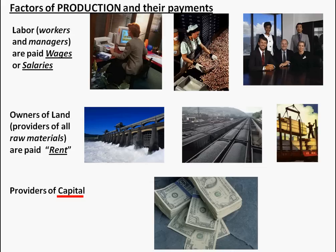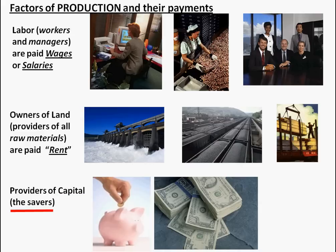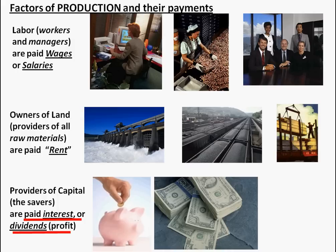Businesses, in order to get started and to grow, often need capital. The money has to come from somewhere, and ultimately comes from people who save money — whether it's the entrepreneur who starts his own business using his own money, or money he borrows from his family. People are paid interest if they loan money or put it into a financial institution, which in turn loans it out. Or if they invest as stockholders or owners of companies, they're paid dividends. We also call that profit.